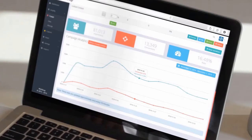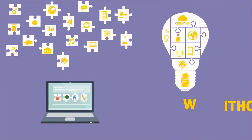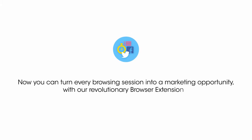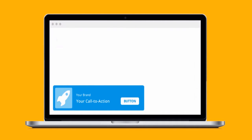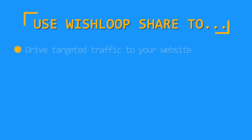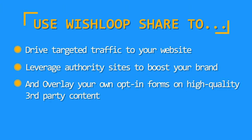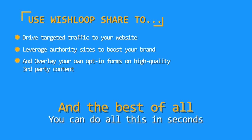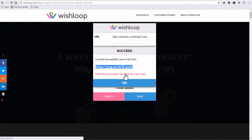Creating professional, effective marketing campaigns has never been so easy. But we didn't stop there. What if you could apply Wishloop's conversion power to any content you discover on the web? Now you can turn every browsing session into a marketing opportunity with our revolutionary browser extension. Wishloop Share allows you to overlay your own custom call to action onto any page you share, so you can get more traffic and leads simply by sharing links to interesting content. Use Wishloop Share to drive targeted traffic to your websites, leverage authority sites to boost your brand, and overlay your own opt-in forms onto high-quality third-party content. And best of all, you can do all of this in seconds without leaving the page you're sharing.